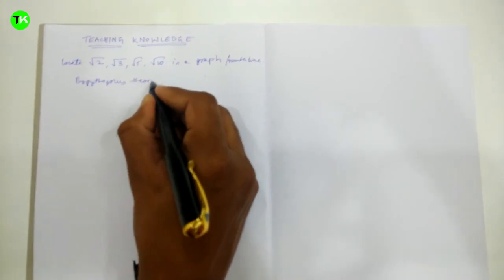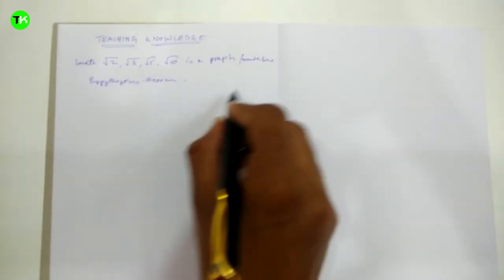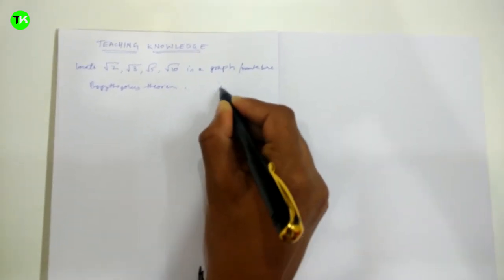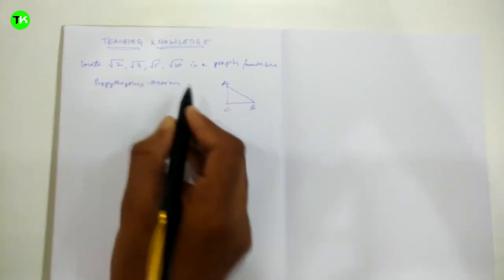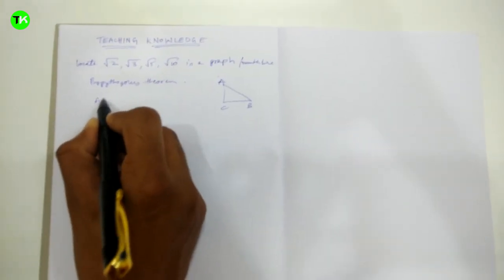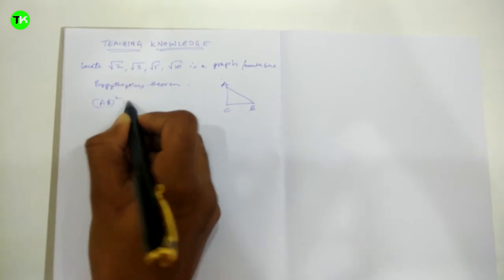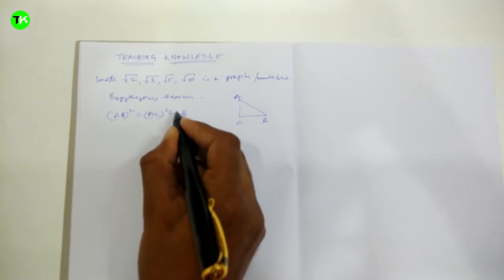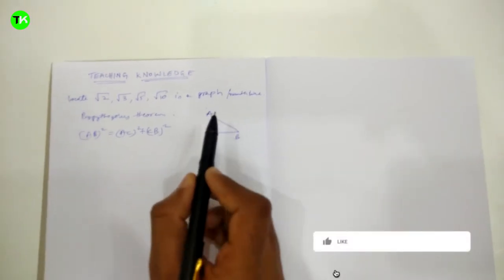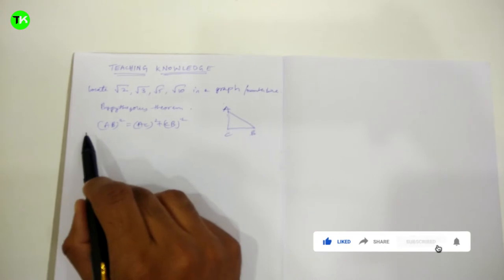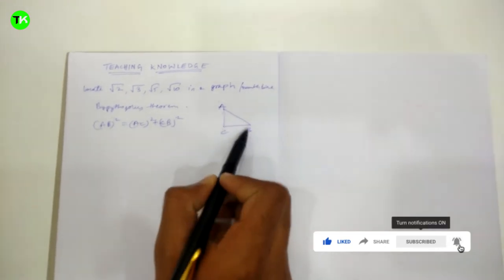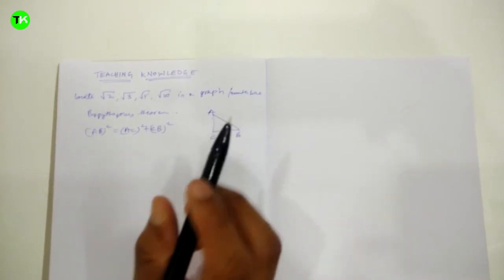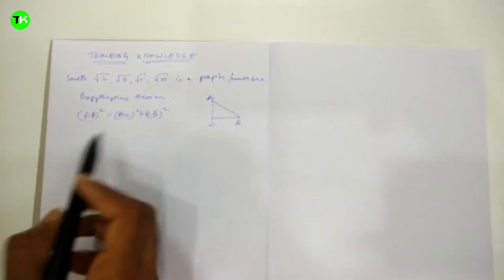By the Pythagorean theorem, consider a triangle with sides A, B, and C. The formula is: AB² = AC² + CB². This means the hypotenuse is AB, and AB squared equals the sum of the squares of the other two sides.